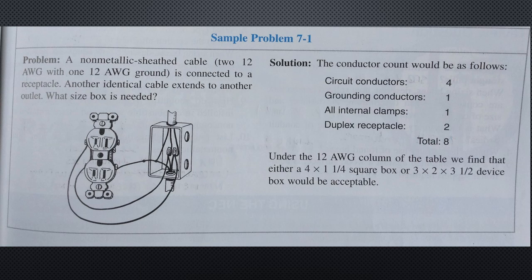Moving on to sample problem 7-1, the first one of the chapter. The problem is: a non-metallic sheathed cable, two 12 AWG with one 12 AWG ground is connected to a receptacle. Another identical cable extends to another outlet. What size box is needed? The solution for the problem: the conductor count would be as follows. Circuit conductors, in this case four. Grounding conductors, one. All internal clamps are counted as one. And finally, the duplex receptacle is counted as two, for a total of eight. So under the 12 AWG column of the table, that is Table 314.16 A, we find that either a four by one and a quarter square box or a three by two by three and a half device box would be acceptable.